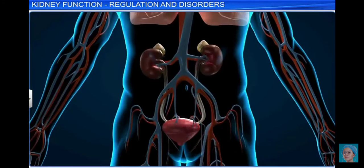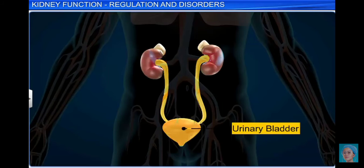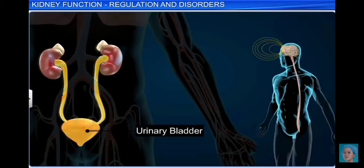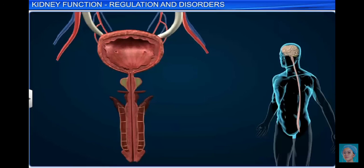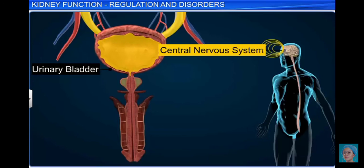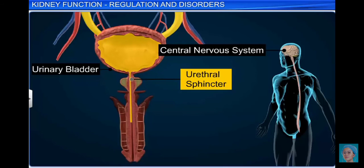Hence, hormonal feedback mechanisms efficiently monitor and control the functioning of the kidneys, leading to the formation of urine, which passes into the urinary bladder, where it is stored until a signal is received by the central nervous system or CNS. As the urinary bladder gets filled with urine, the bladder is stretched and causes the stretch receptors on its walls to send a signal to the CNS. The CNS, in turn, sends motor messages that make the smooth bladder muscles contract and the urethral sphincter relax.